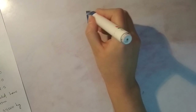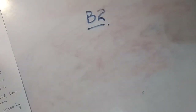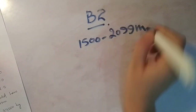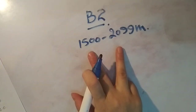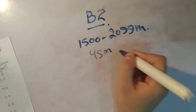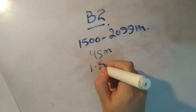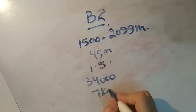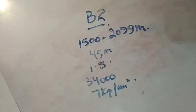So this was the classification given to us by ICAO। एक और example: B2 type of airport — इसका मतलब है runway length 1500 to 2099 meters, width of pavement 45 meters, maximum longitudinal grade 1.5%, single isolated wheel load 34,000 kg, और tire pressure 7 kg per cm²। तो यह थी हमारी classification जो ICAO ने दी थी — this was all about the classification of airports.